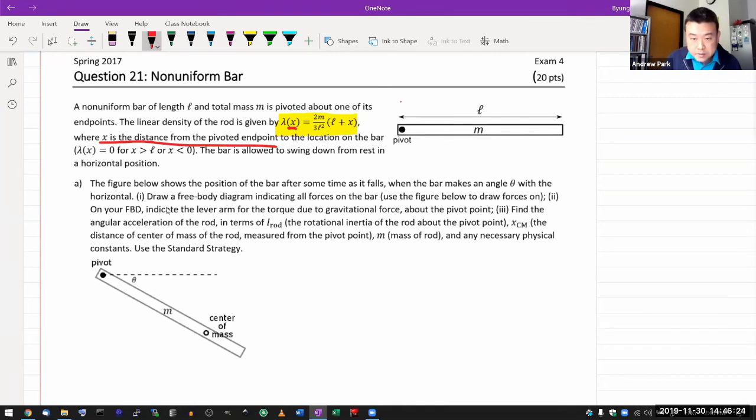So this at the pivot is where I have my x equals zero. And when I go all the way to the end here, it's going to be x equal to L.